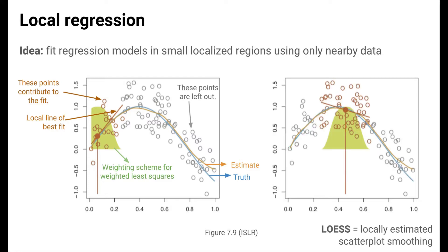An example of the process for another target point is shown on the right. Here, the local weighted least squares approach gives a fit that slopes downward. Overall, this approach is pretty similar to k nearest neighbors regression. This technique is called loess, which stands for locally estimated scatterplot smoothing.